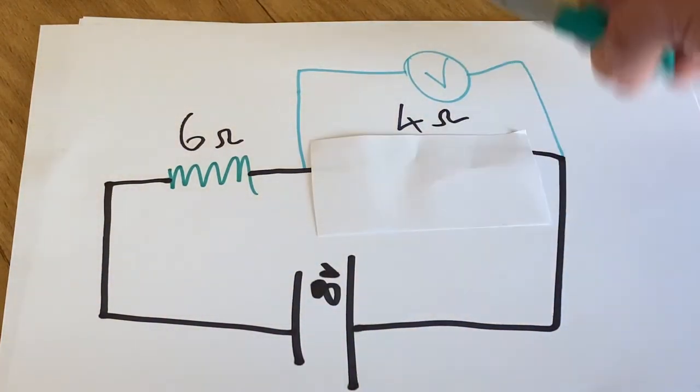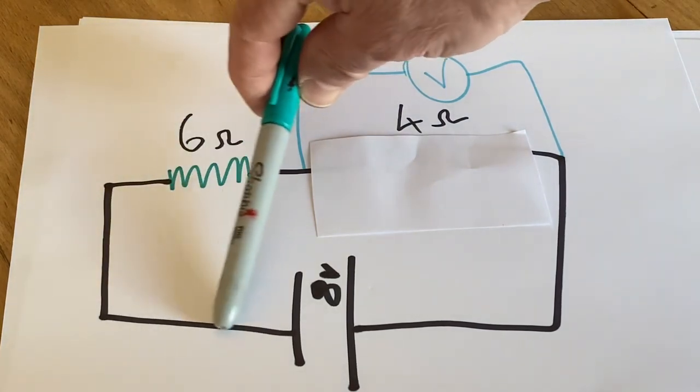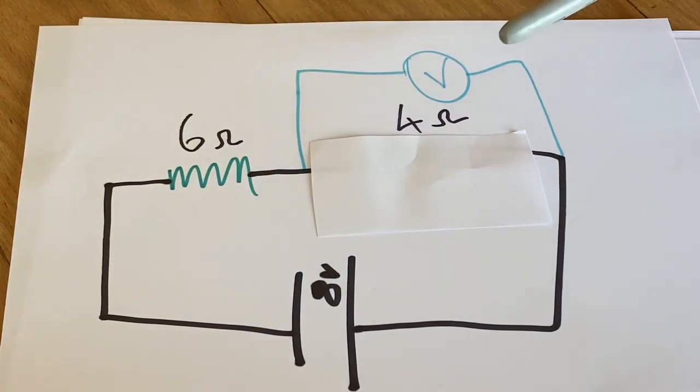So in that scenario we would have eight volts of pressure on this side and zero volts of pressure on this side. So the difference between eight and zero is eight. So what would show on the voltmeter screen is eight volts.